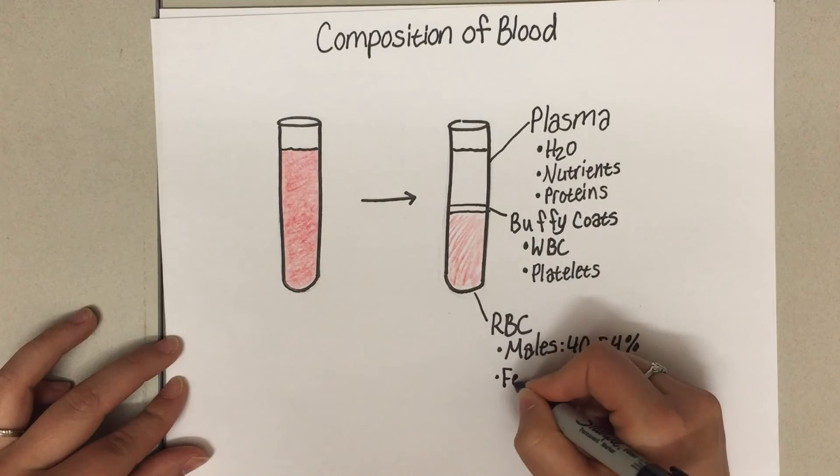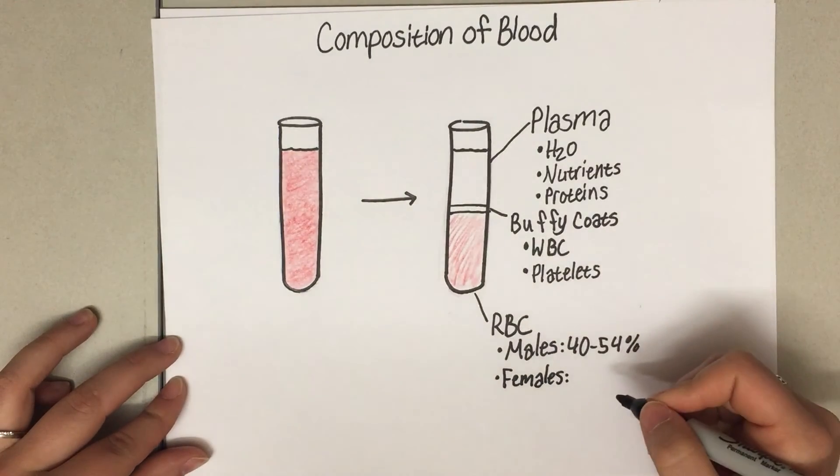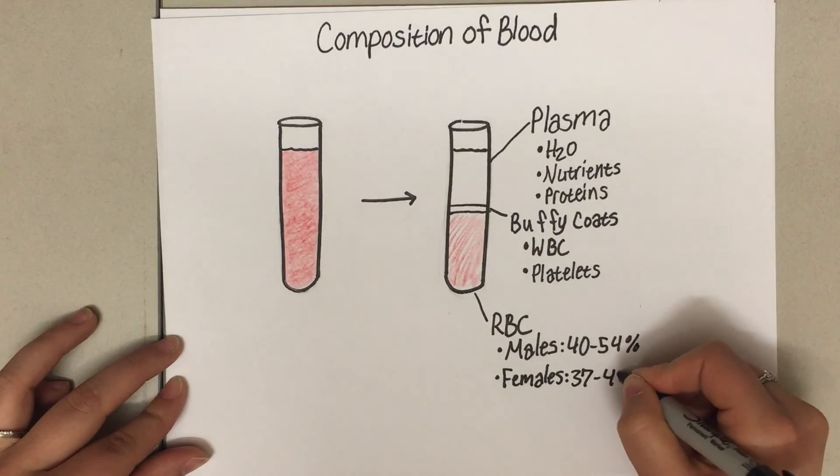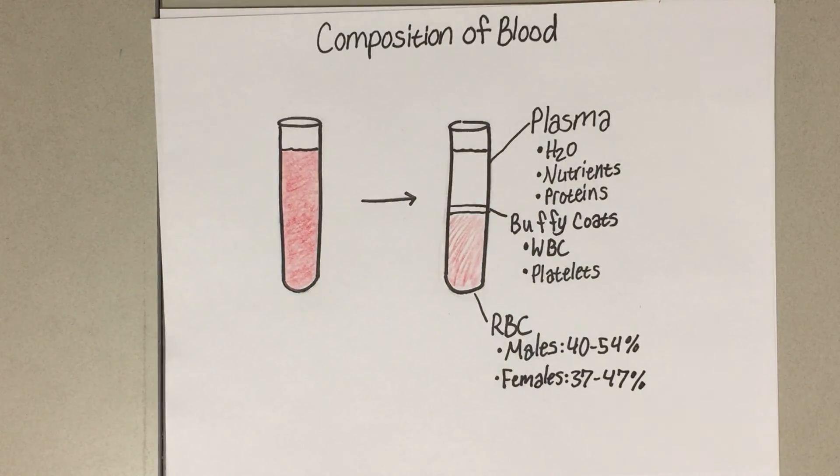Females have a slightly different healthy range. It's a little bit lower than males. A healthy range of hematocrit for females is 37 to 47%. And together, these make up your blood.